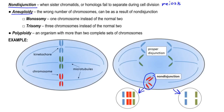Having the wrong number of chromosomes is called aneuploidy. Aneuploidy can result from other things, but it does commonly result from non-disjunction. When you have aneuploidy, you can end up with organisms that have monosomy — having only one chromosome instead of the normal two — or you can have trisomy, which is three chromosomes instead of the normal two.